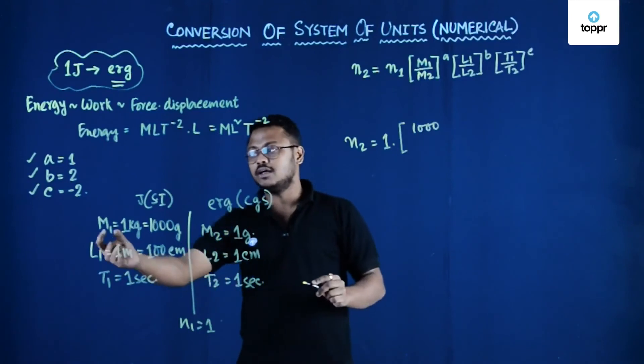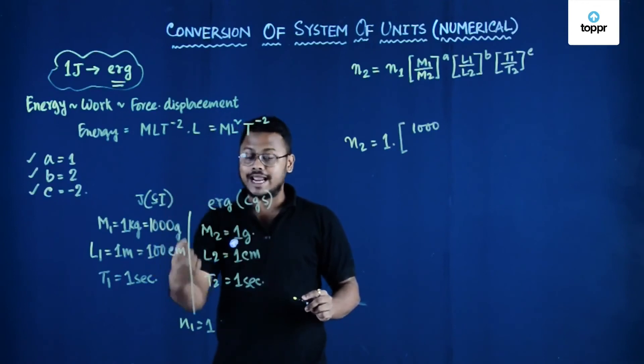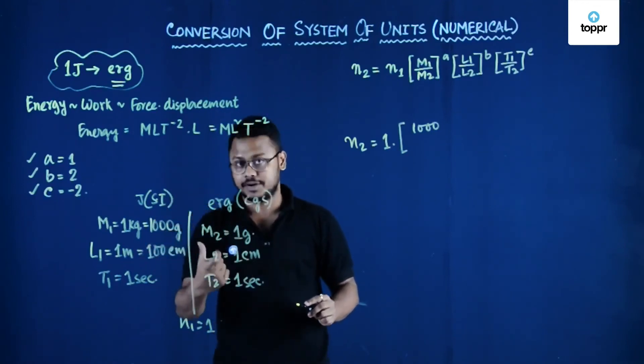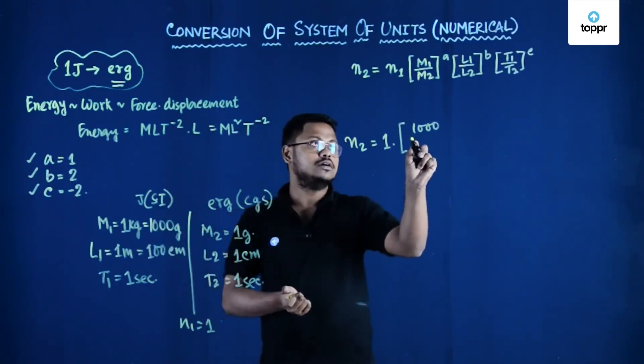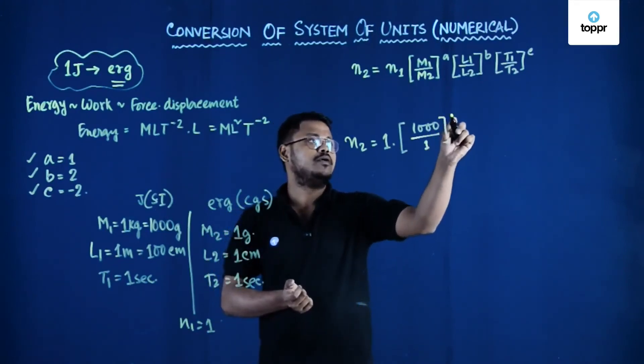So you have converted the old unit of measurement to new because we are going to find in the new unit of measurement. So 1000 upon 1 to the power a,